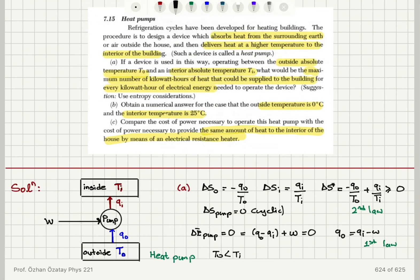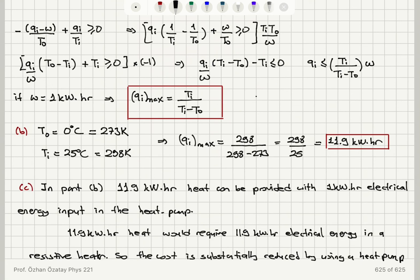So we are delivering heat to the inside of the building, extracting heat from outside in a cyclic process with electrical energy input. If we look at the total entropy change, that tells us that the maximum amount of heat we can provide is Ti over Ti minus T0 times W. And if W is 1 kilowatt hour, it is Ti over Ti minus T0. In the case of 0 degrees Celsius and 25 degrees Celsius, or 273 Kelvin and 298 Kelvin, this corresponds to 11.9 kilowatt hours of heat provided to the building. We have 1 kilowatt hour input, 11.9 kilowatt hour output. But if you use an electrical resistive heater, you would need the same amount of electrical energy to turn into heat. Therefore, this scheme is a lot cheaper.